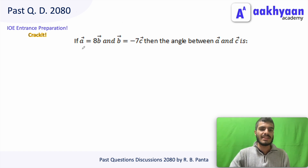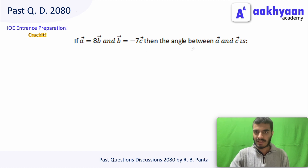If vector a is equal to vector b, and vector b is equal to minus 7 times vector c, then find the angle between vector a and vector c.